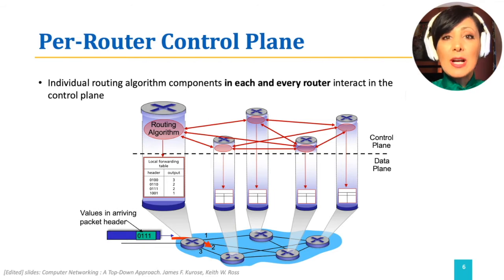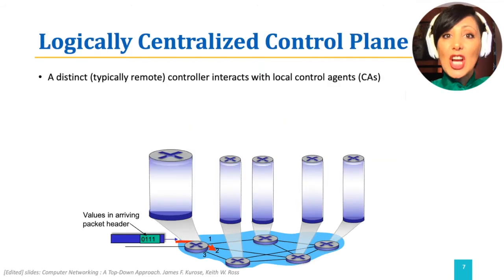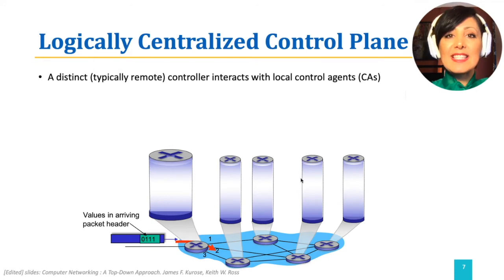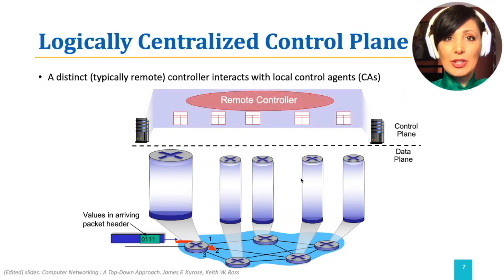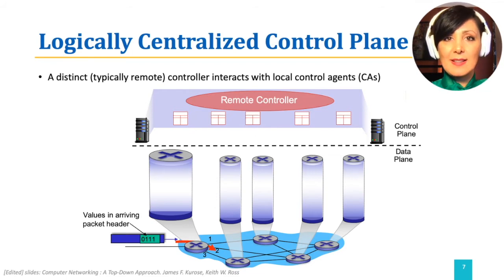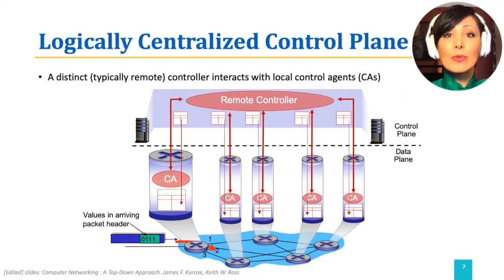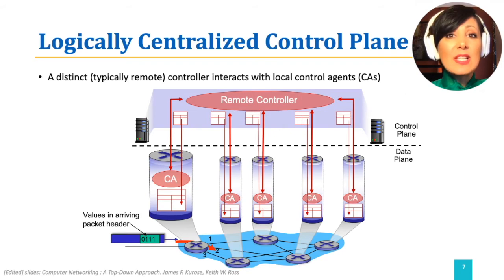This means that each router writes its own forwarding tables. In the logically centralized control plane, which is the more recent solution used in Software Defined Networking, a distinct central network controller — often a remote server — interacts with local control agents to decide the routes, and writes the per-router forwarding tables at the data plane accordingly. The decisions are made centrally and propagated through writing individual forwarding tables.